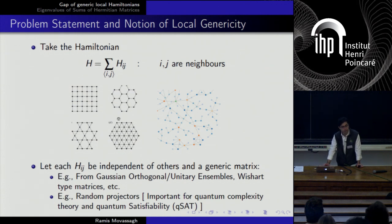The local terms h_{ij} can be from a GUE or GOE, or they could be random projectors with eigenvalues 0 and 1, or more general things.